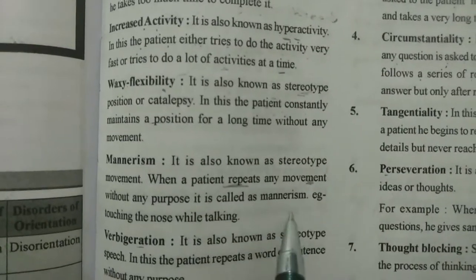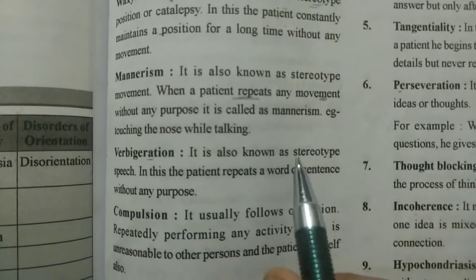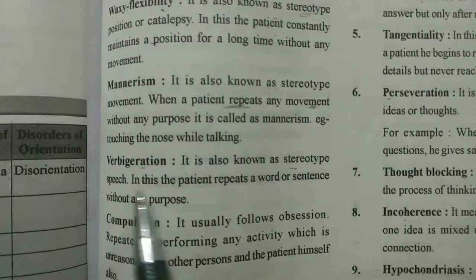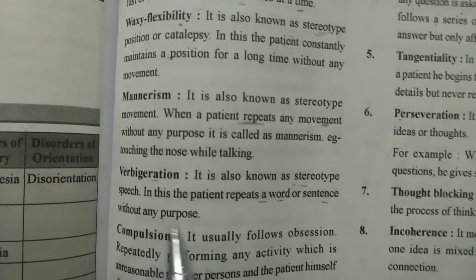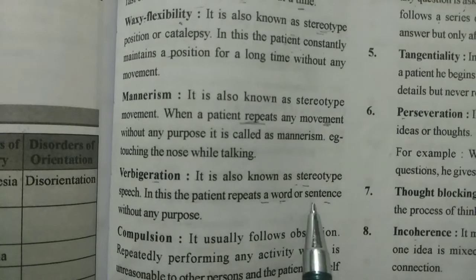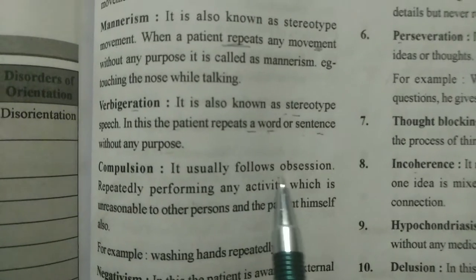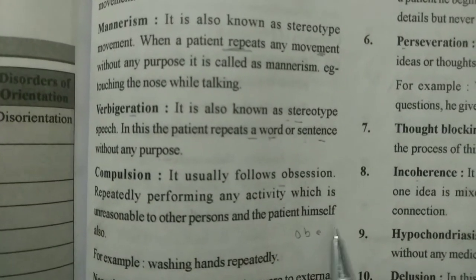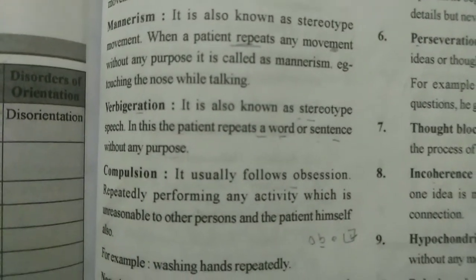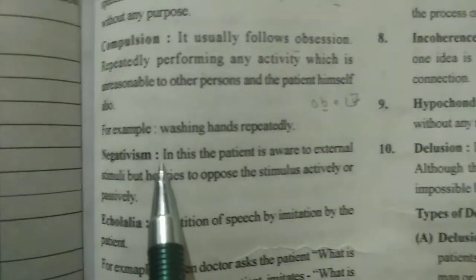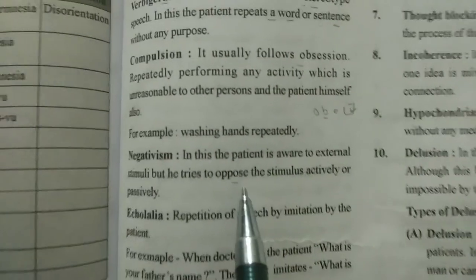For example, touching your nose repeatedly can be considered a mannerism. Next is verbigeration, which is also called stereotype speech. This refers to the repetition of the same word or sentence without any purpose.